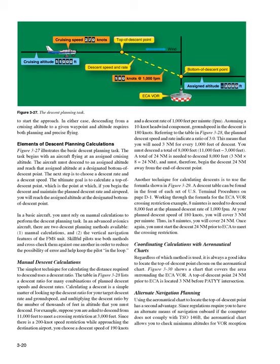Referring to the table in Figure 3-28, the planned descent speed and rate indicate a ratio of 3.0. This means that you will need 3 nautical miles for every 1,000 feet of descent. You must descend a total of 8,000 feet (11,000 feet minus 3,000 feet). A total of 24 nautical miles is needed to descend 8,000 feet (3 nautical miles times 8 equals 24 nautical miles), and must therefore begin the descent 24 nautical miles away from the end-of-descent point.